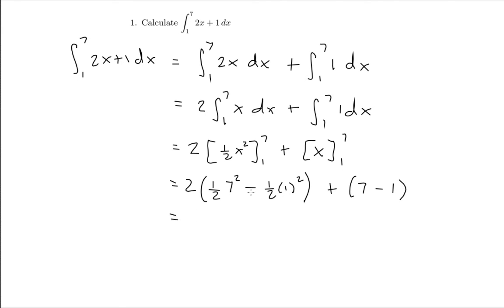So now this becomes 2 times one-half times 49 minus one-half because 1 squared is just 1, plus 6. Now this 2 cancels out this one-half and this one-half so this becomes 49 minus 1 plus 6. And when I add all these three numbers up I get 49 plus 5 which is 54, which is the final answer.